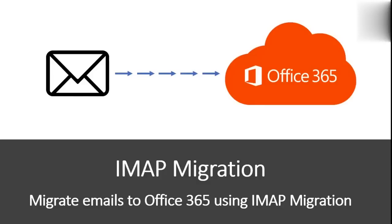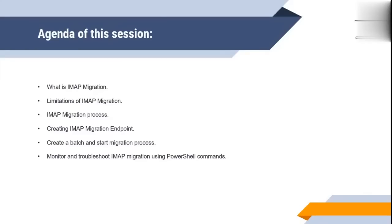Hi guys, welcome to Phase 365 concepts. In this video we will be talking about IMAP migration — what it is, the scenarios in which it is performed, its limitations, the prerequisites and steps involved, and I will demonstrate how to create an IMAP migration endpoint and migrate emails from an Outlook.com account to Office 365. I'll also show how to troubleshoot the migration process using PowerShell commands.